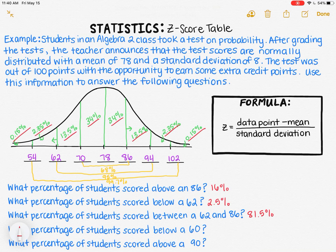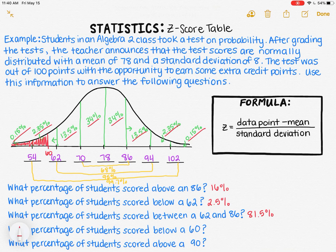The next question asks: what percentage of students scored below a 60? This is a little different because 60 isn't already labeled on our curve — it would be between 54 and 62. We're looking for the percentage of data under the curve to the left of 60. We can't just add up the labeled percentages since 60 isn't on an exact tick mark. What we're going to do is find the Z-score for 60, and then use a Z-score table to find the exact percentage to the left of 60.